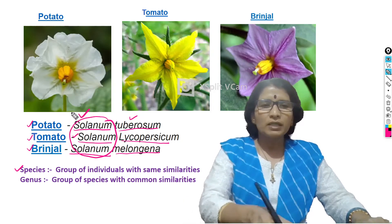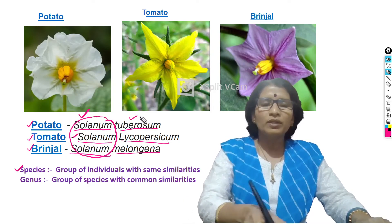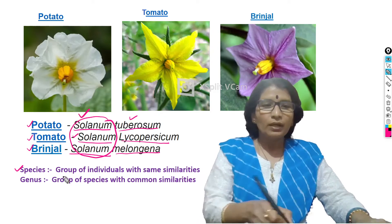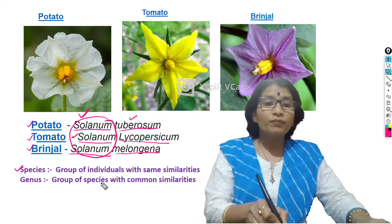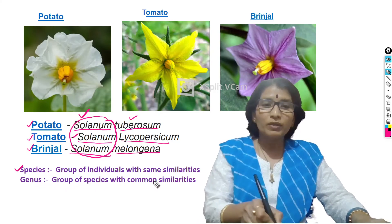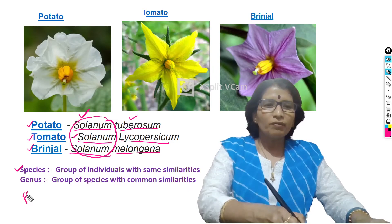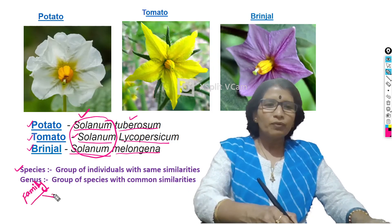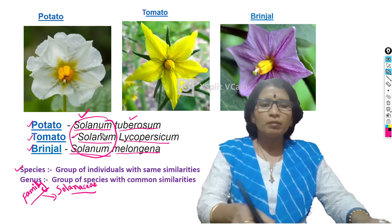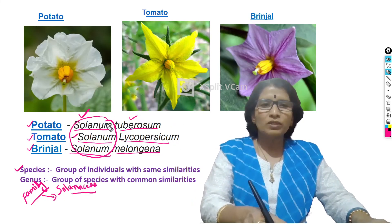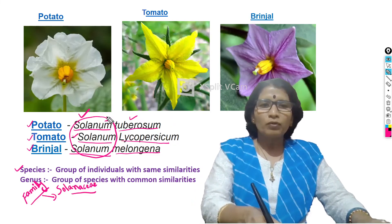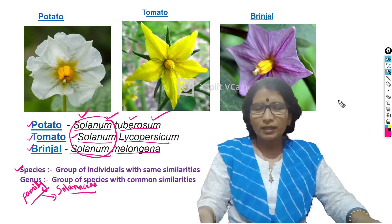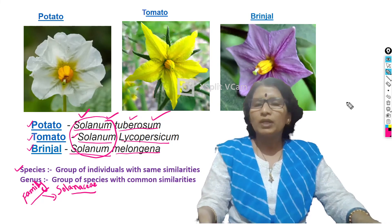So, genus means a group of species with common similarities — here, the common similarity is flower structure. That is why all these plants have a common genus but different species. The next group — a group of genera with common similarities — comes under a family. All these plants come under the family Solanaceae. Now, in the scientific name, you have understood somewhat about genus and species. If you like this video, please share and subscribe to my channel. Thank you.